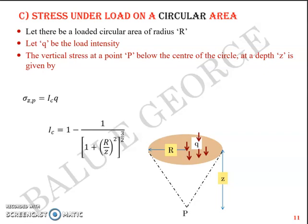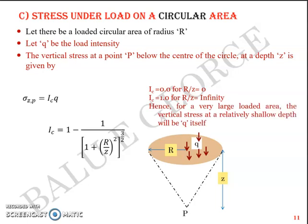Ic = 1 − 1 / [1 + (R/Z)²]^(3/2). When R/Z = 0, Ic = 0, and when R/Z = ∞, Ic = 1. This means for a very large loaded area, the vertical stress at a relatively shallow depth equals q itself. Circular loads are commonly encountered in practice for cement silos or circular water tanks.